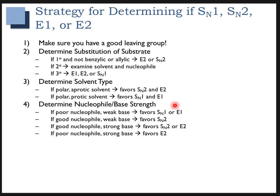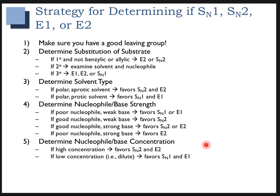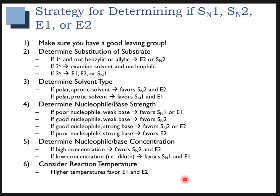For nucleophile and base strength: good nucleophiles that are weaker bases favor SN2; good nucleophiles that are stronger bases could do SN2 or E2; a poor nucleophile that's still a strong base — too bulky to be a good nucleophile — gives E2; a poor nucleophile and a weak base give either SN1 or E1. Higher concentrations of nucleophile or base favor SN2 and E2; lower or dilute conditions favor SN1 and E1. Higher temperatures favor elimination reactions.